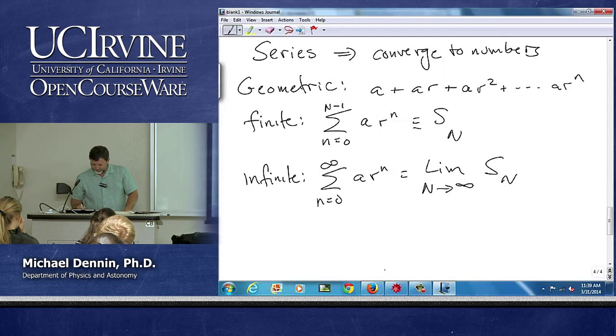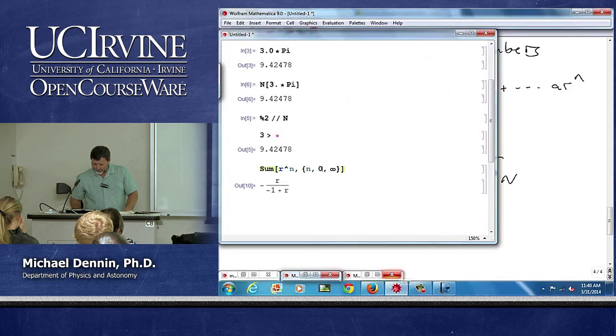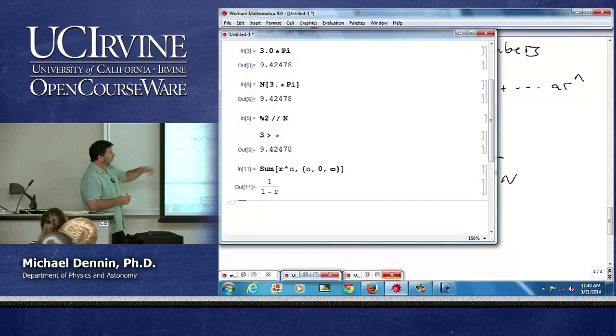We're going to be doing zero to infinity. I forgot a term. And I get one over one minus r.